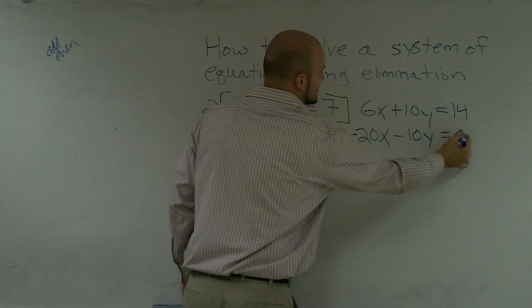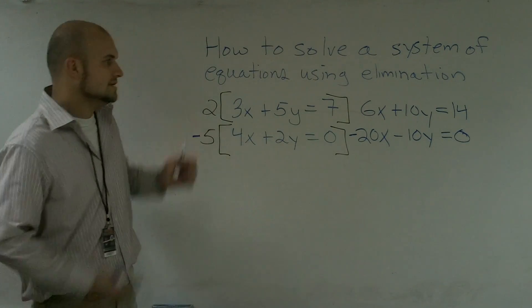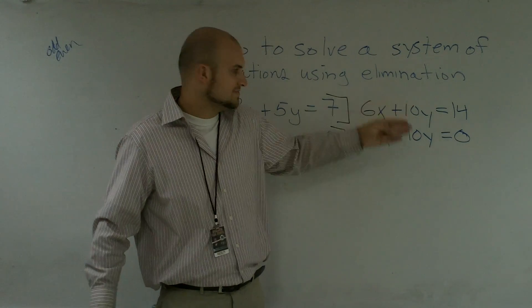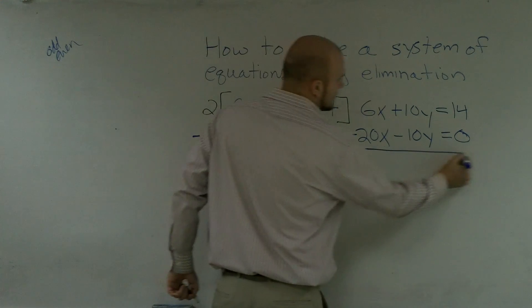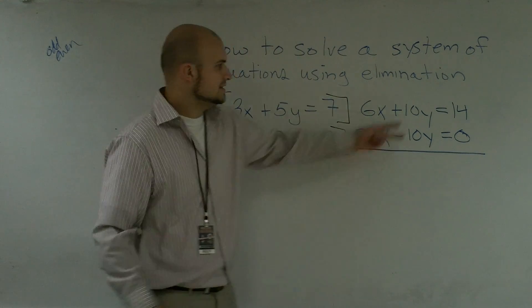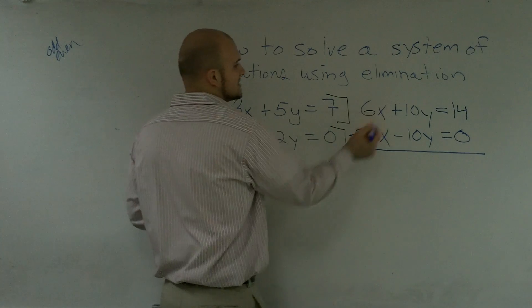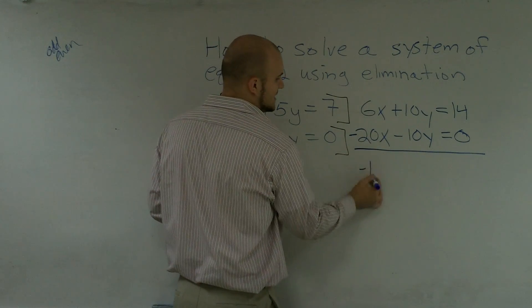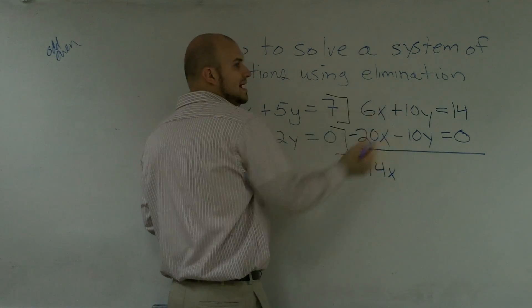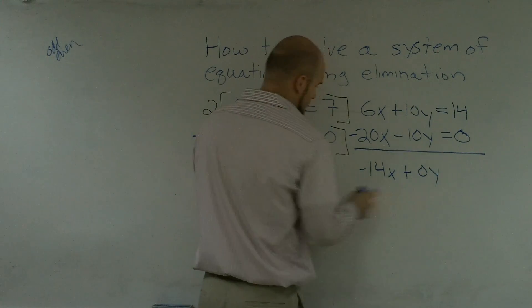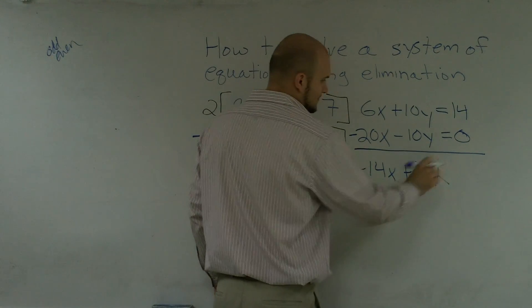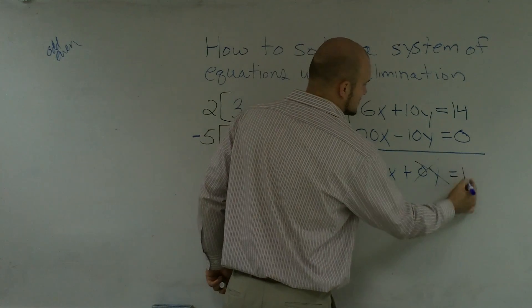The reason why it was so important to make this 5 a negative is because now I have a positive and a negative. So now when I add these two equations up, these two are going to cancel out. 6x plus negative 20x gives me negative 14x. 10 minus 10 becomes 0y, which we know is going to cancel out, equals 14.